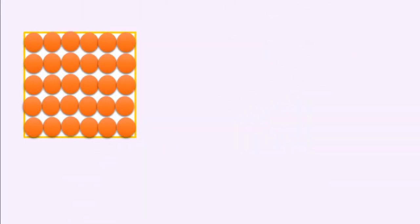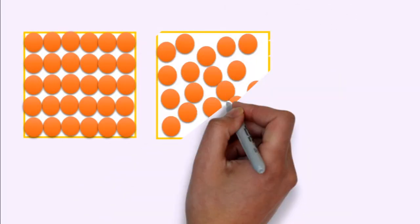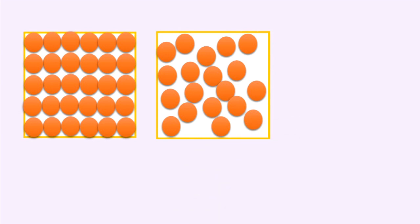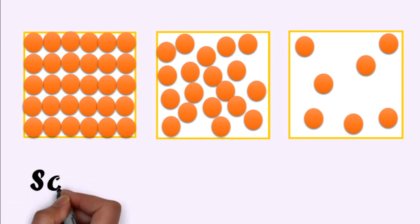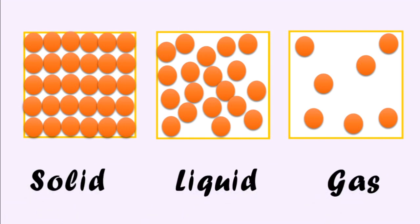Matter is made up of tiny particles and based on the arrangement of these particles, they can be divided into different states. They are solid, liquid and gas.